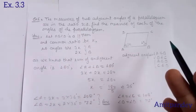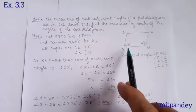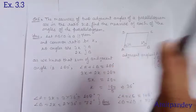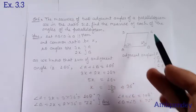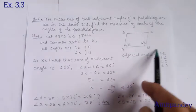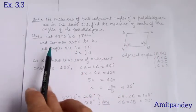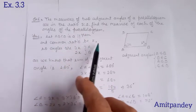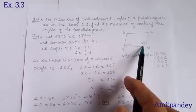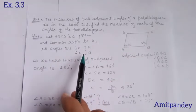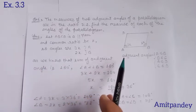Assume the adjacent angles. What do we mean by adjacent? Just nearby one. The angle nearby A is B or D. For B, that's C and A. For C, D or B. So these are the groups of adjacent angles. Any one of them we can take to solve the question. Let the common ratio be X, so angles are 3x and 2x. Angle A is 3x and angle B is 2x. As you know, the sum of adjacent angles is 180°.